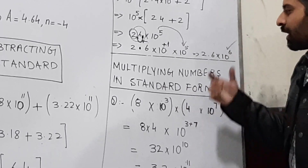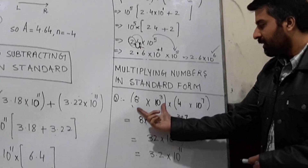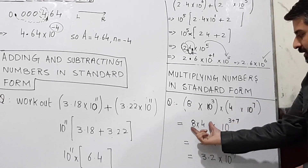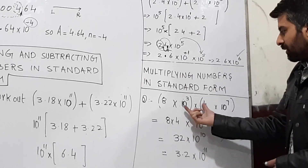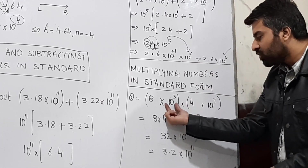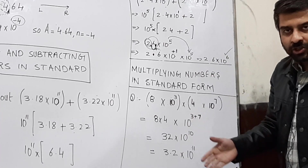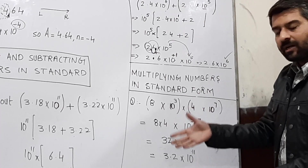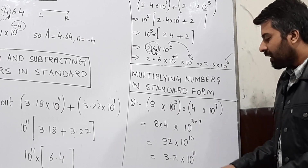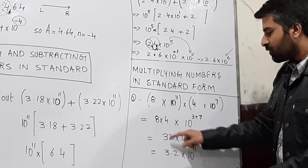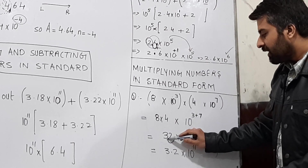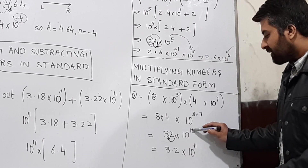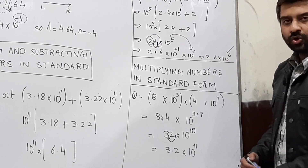For multiplication of numbers in standard form, multiply the numbers together — 8 × 4 = 32 — and add the powers of 10 since the bases are the same: 10³ × 10⁷ = 10 raised to the power 3+7 = 10¹⁰. This gives 32 × 10¹⁰. Now convert 32 to standard form: move the decimal 1 digit from right to left to get 3.2, and add 1 to the power. So the answer is 3.2 × 10 raised to the power 11.